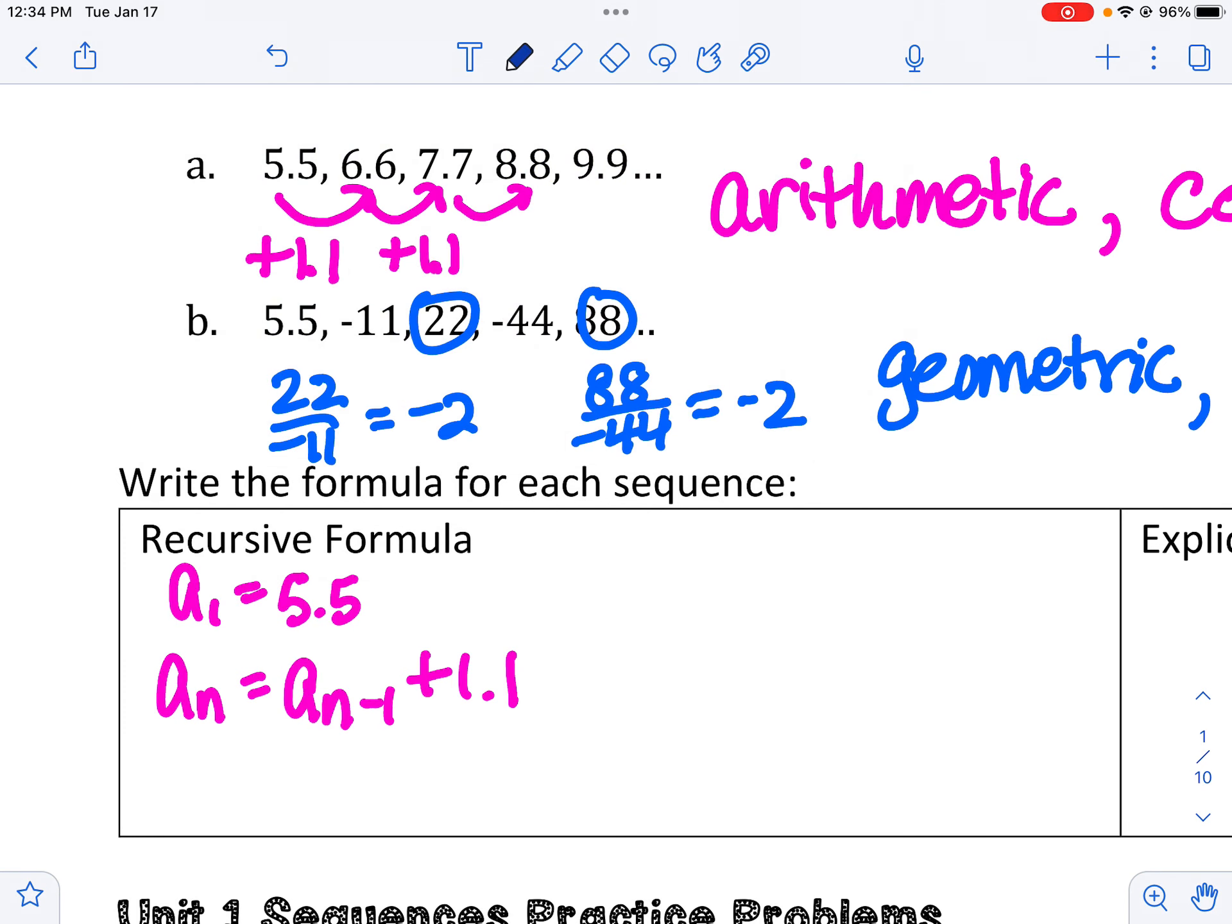For the second sequence, the geometric one, again, we need the first term. Again, it's 5.5. To find any number, you take the number before it, A sub n minus 1. And this time, we're going to multiply it by negative 2. So there's the recursive formula.